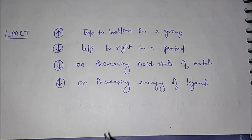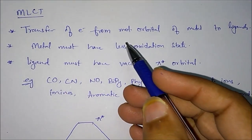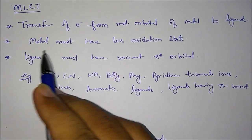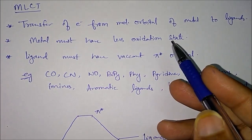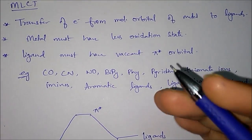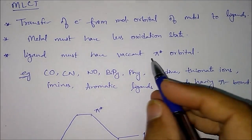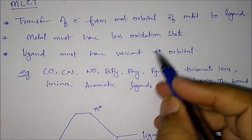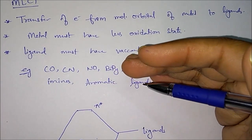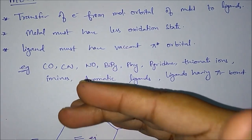Now we will move on to metal to ligand charge transfer. For MLCT, the transfer of electrons will take place from the molecular orbital of the metal to the molecular orbital of the ligand. The metal must be in a low oxidation state, meaning its orbitals should be filled with a few electrons. The ligand must have a vacant pi anti-bonding orbital - this is very important. The ligand should have a vacant high energy orbital and the metal should have lower-lying filled orbitals.